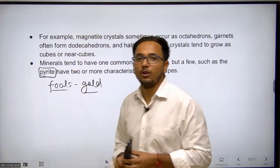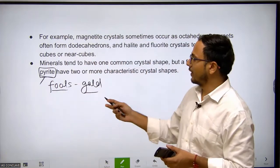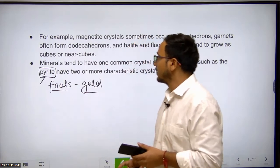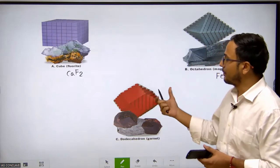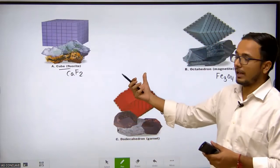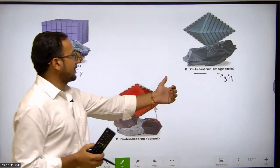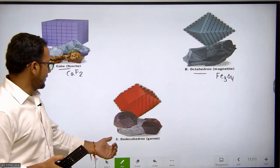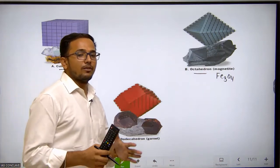This is called fool's gold because it has a golden color - it's yellow and golden. Here you can see the different colors and different mineral crystal shapes, like the cubical shape - fluoride has a cubical shape with calcium fluoride. Octahedron - magnetite has an octahedron shape. And garnet has a dodecahedron shape. So different minerals have different crystal shapes.